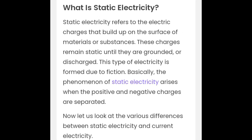What is static electricity? Static electricity refers to the electric charges that build up on the surface of materials or substances. These charges remain static until they are grounded or discharged. This type of electricity is formed due to friction. Basically, the phenomena of static electricity arises when the positive and negative charges are separated.